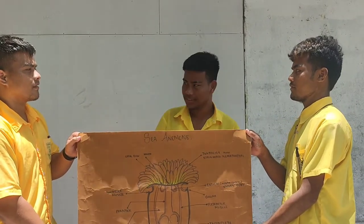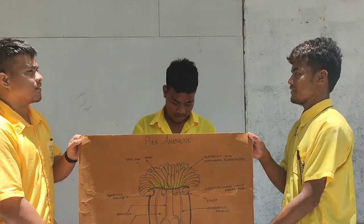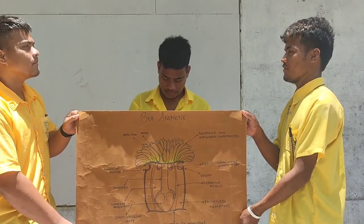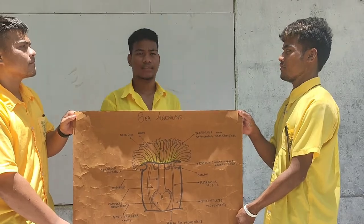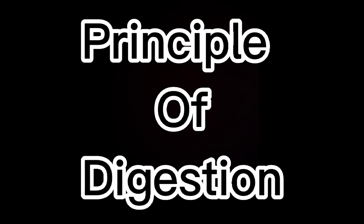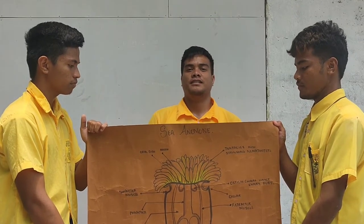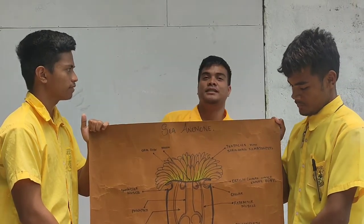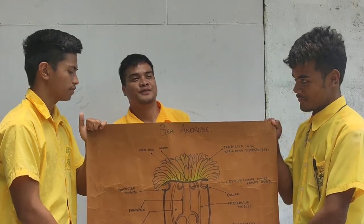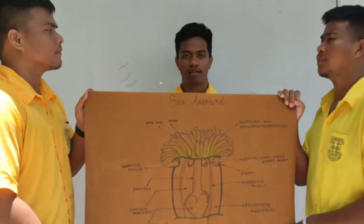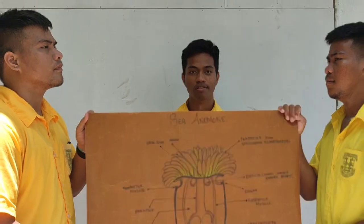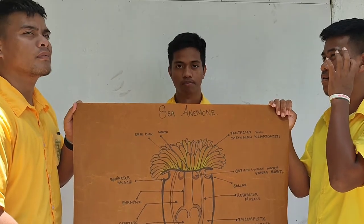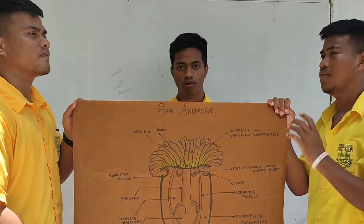The first principle of digestion is ingestion — when an animal takes food into the digestive tract. The second principle is digestion, when the animal body gets busy breaking down the food. The third principle is absorption, which pertains to the process of absorbing or assimilating substances into the cell or across the digestive tract.